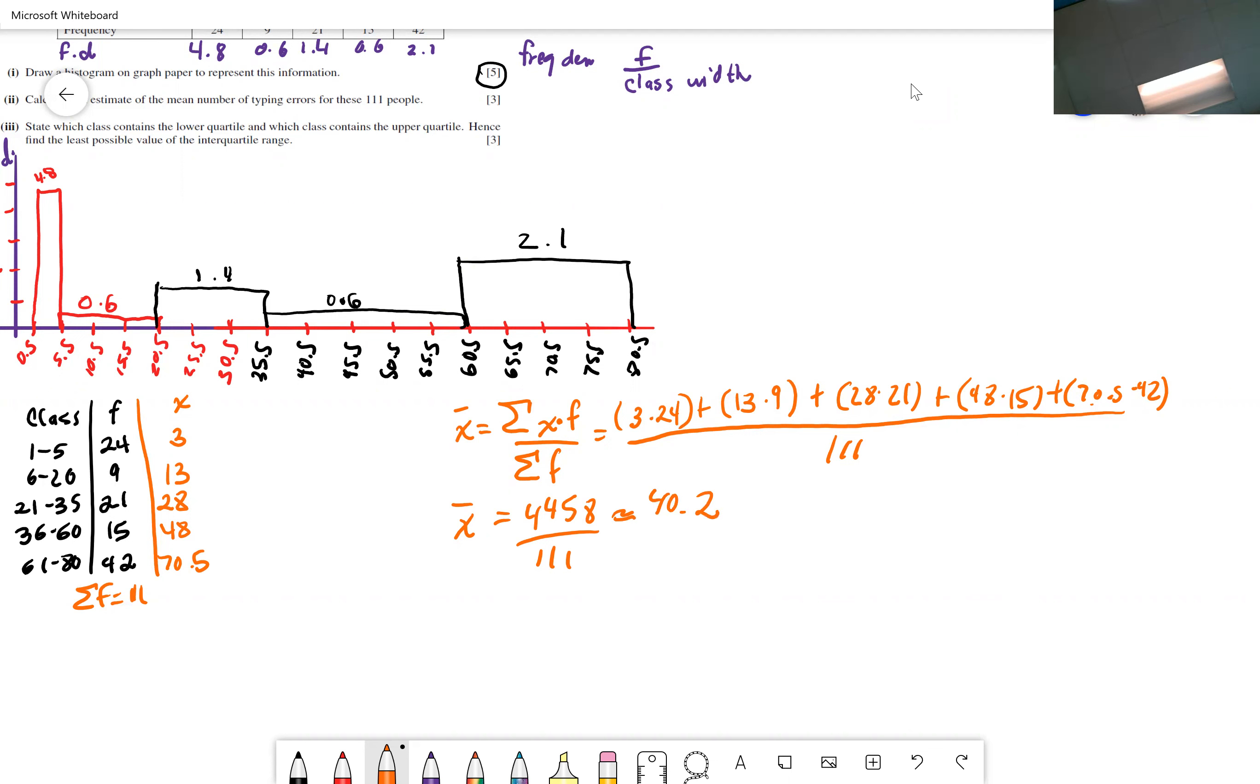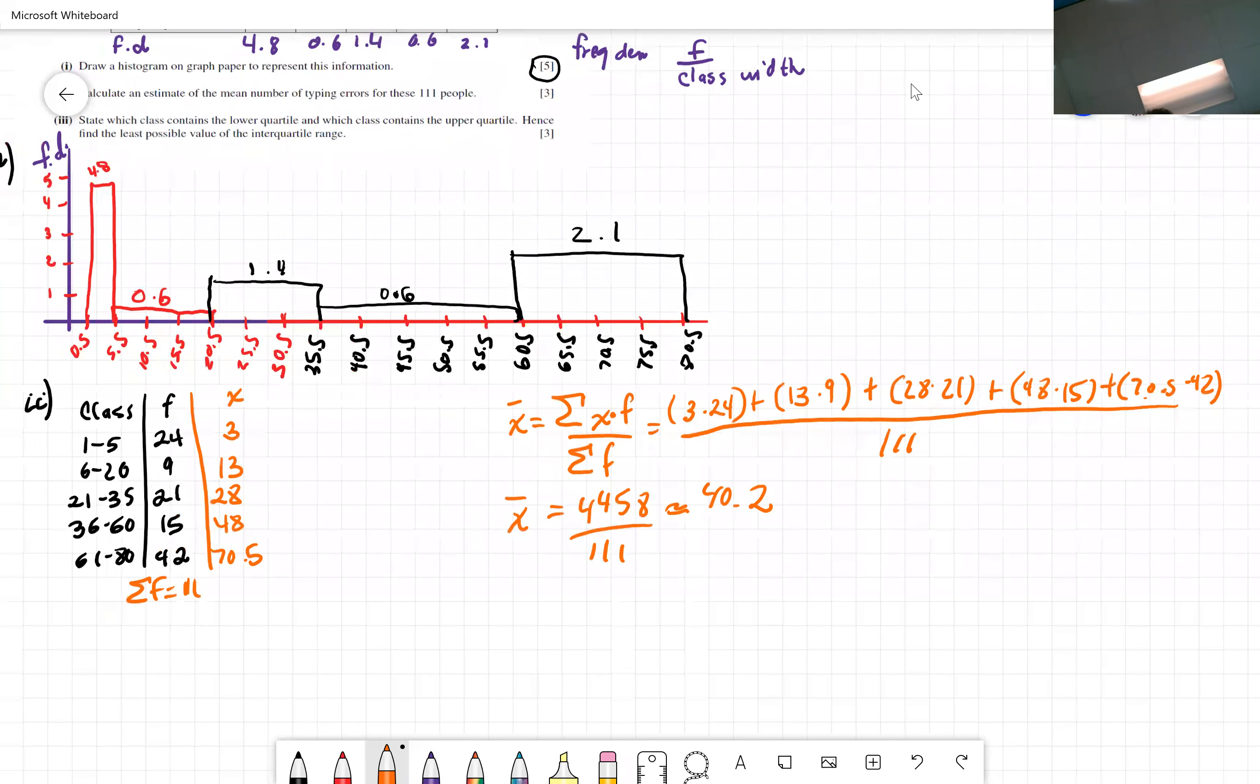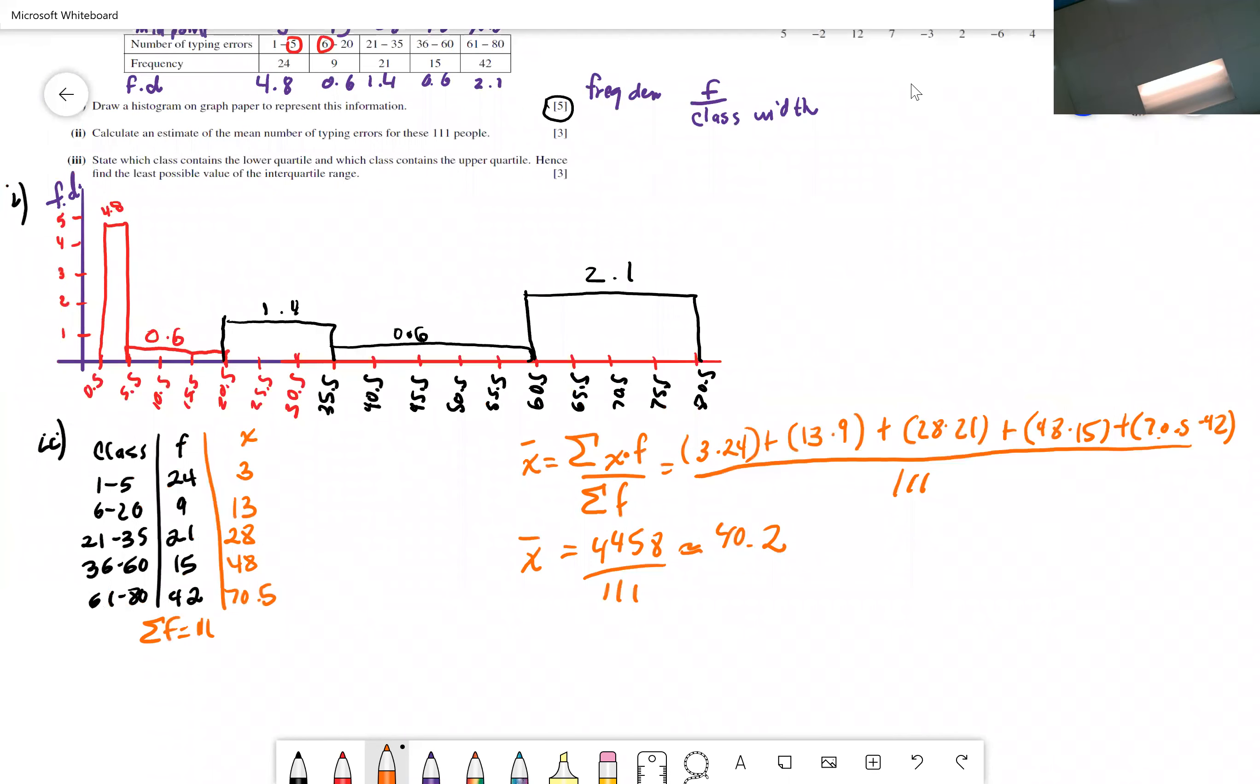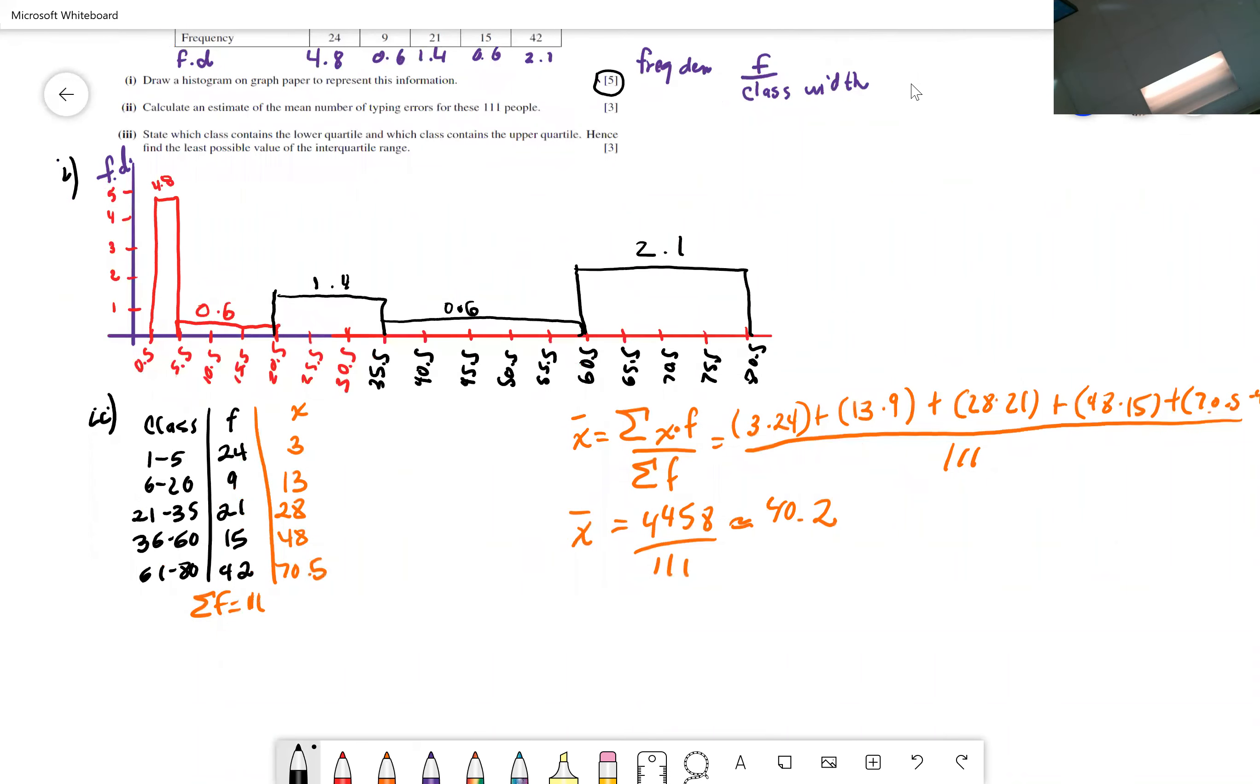So the numerator is 4,458 divided by 111. And that's approximately 40.2. So you would round by like the first one? It depends. The question here doesn't tell us what to do. Obviously, you wouldn't report that as a 40. 40.2, 40.16, that makes sense to do.